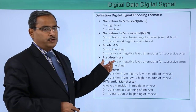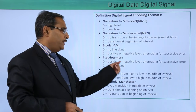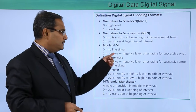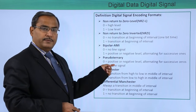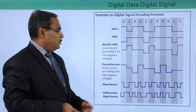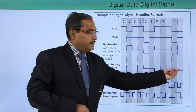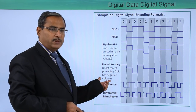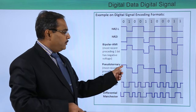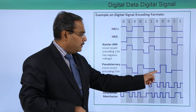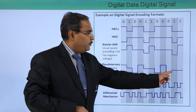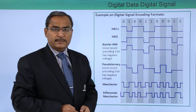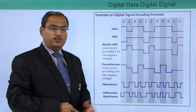Next we go for Pseudo Ternary. In Pseudo Ternary, 0 means positive or negative level alternating for successive zeros, and 1 means no line signal — just the reverse of Bipolar AMI. For 1, there is no line signal. For 0, considering the preceding 0 had negative level, we get positive, negative, positive; then another 0 gives negative, positive. For 1, no line signal; then negative, positive, negative, then no line signal. This is how Pseudo Ternary works.